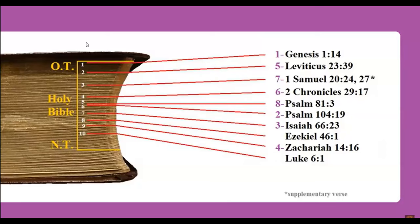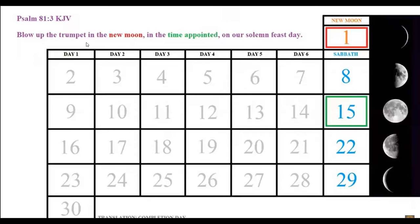Psalm 81: 'Blow up the trumpet in the new moon, in the time appointed, on our solemn feast day.' This trumpet could also be heard on the full moon, which is here translated as 'time appointed,' and according to some scholars that was most likely the first day of the Feast of Tabernacles or Feast of Passover.